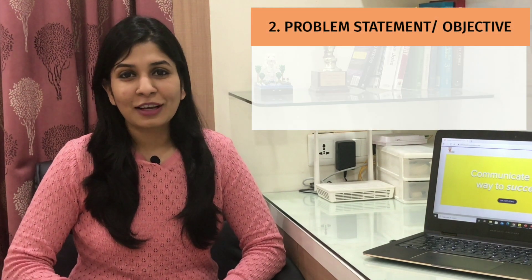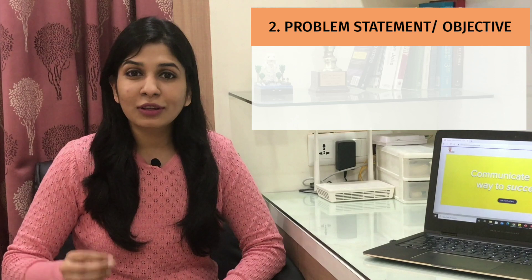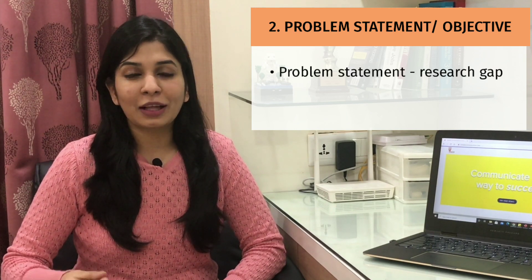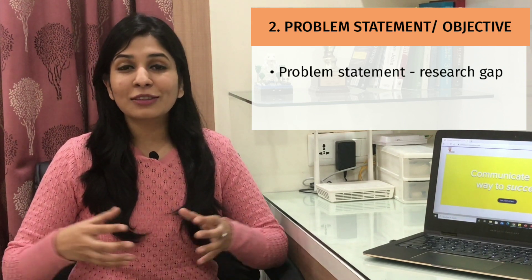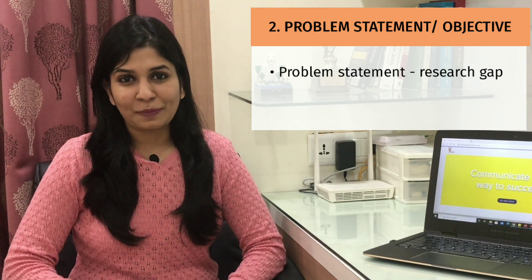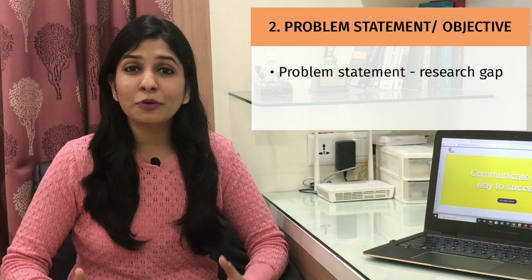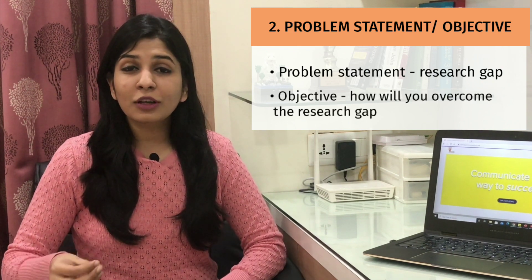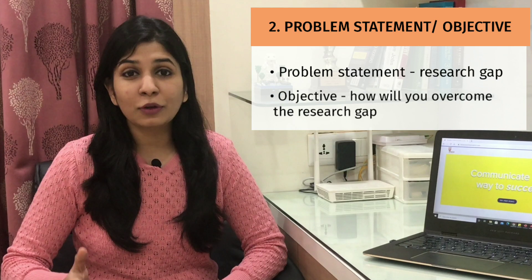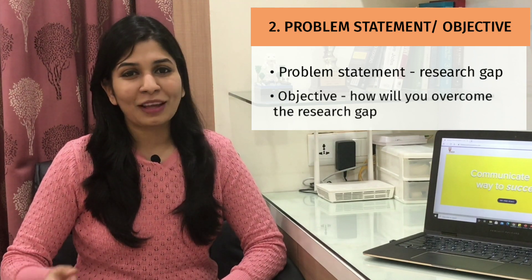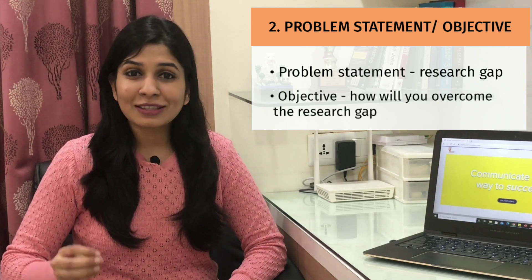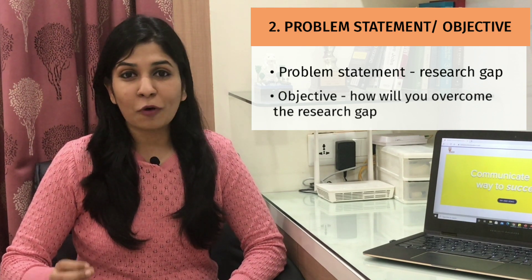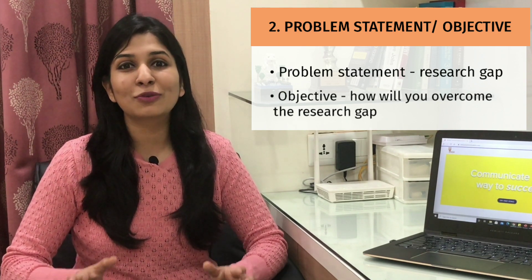The next component is the problem statement or objective. Here you need to first talk about the research gap — what is the problem that existing researchers have not been able to solve so far. That is the problem statement. After that, you can also share the objective, which is what you are going to do in this project or research paper to overcome that research gap. Make sure you include the research gap and the objective in one to two lines only.